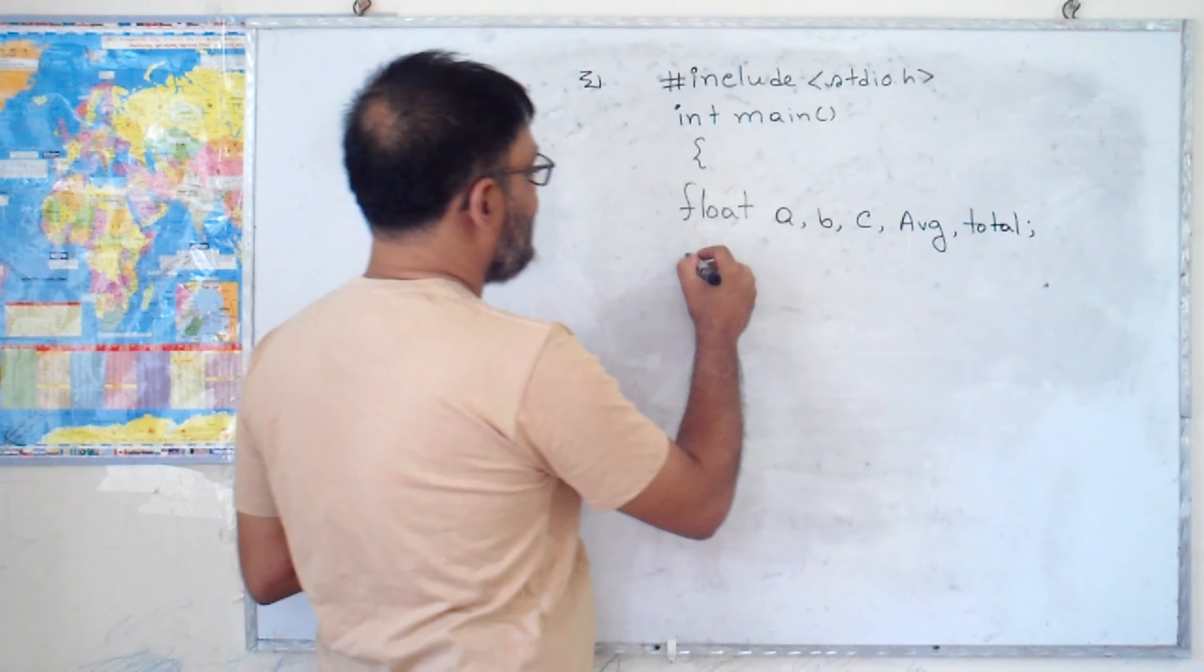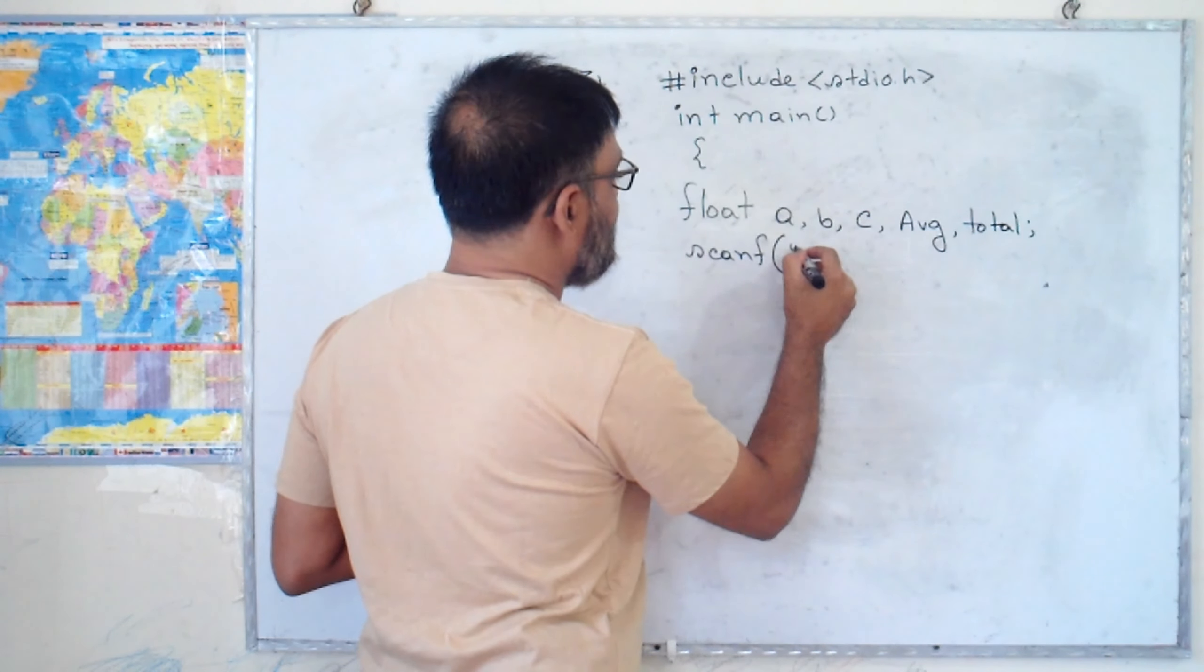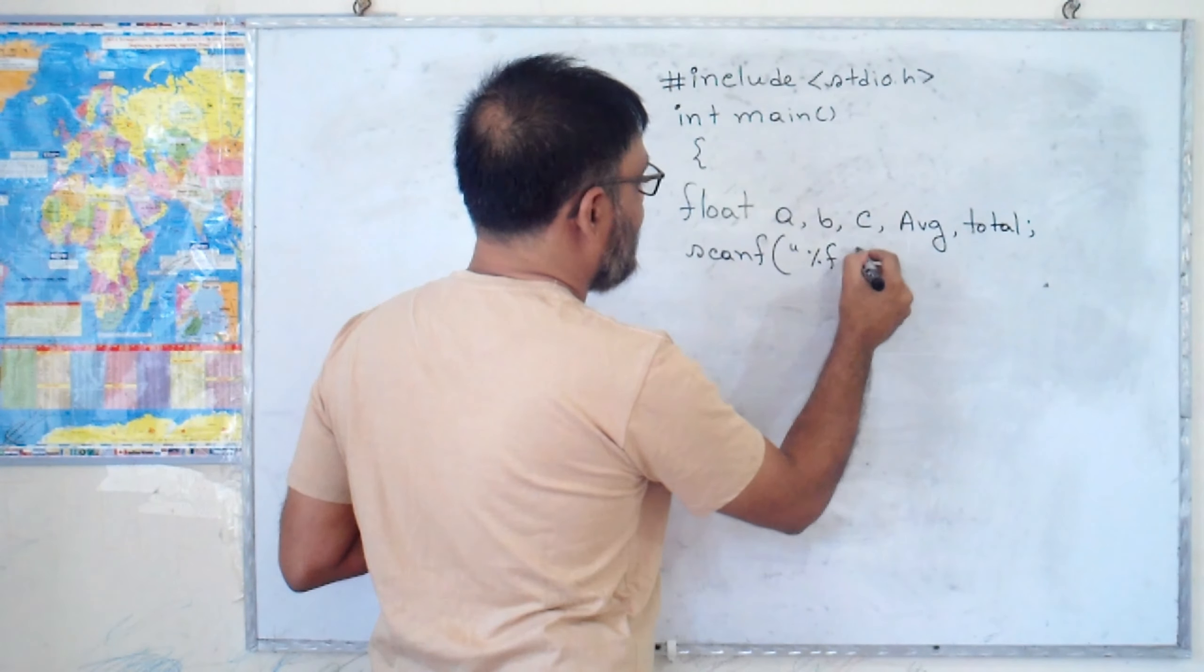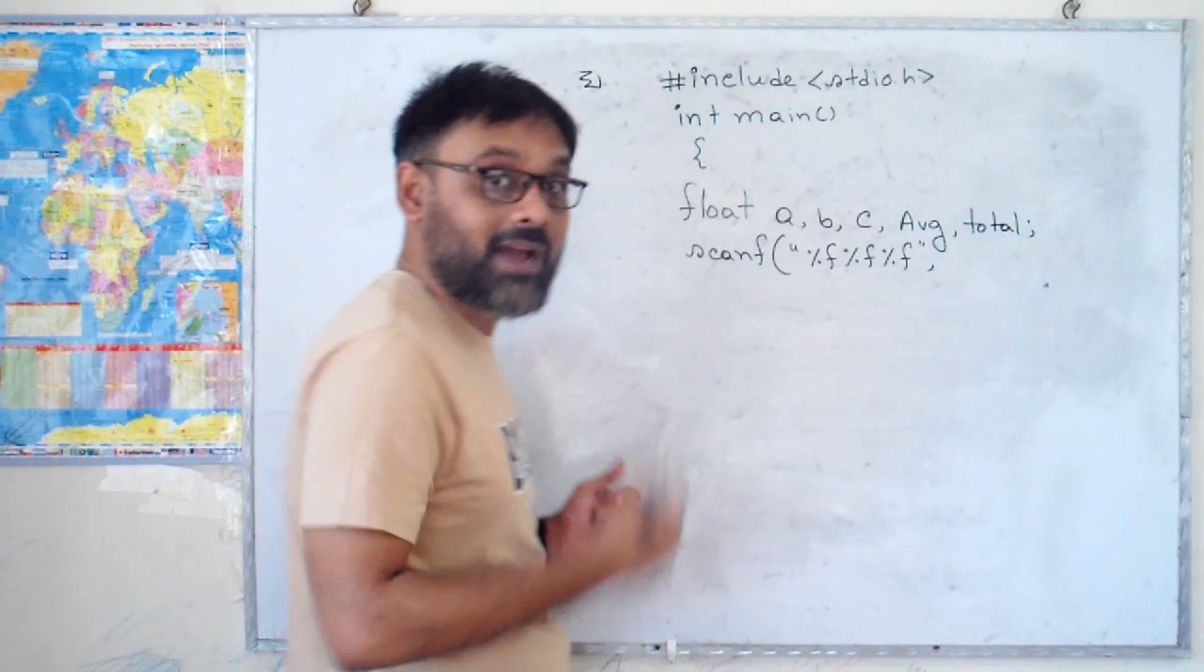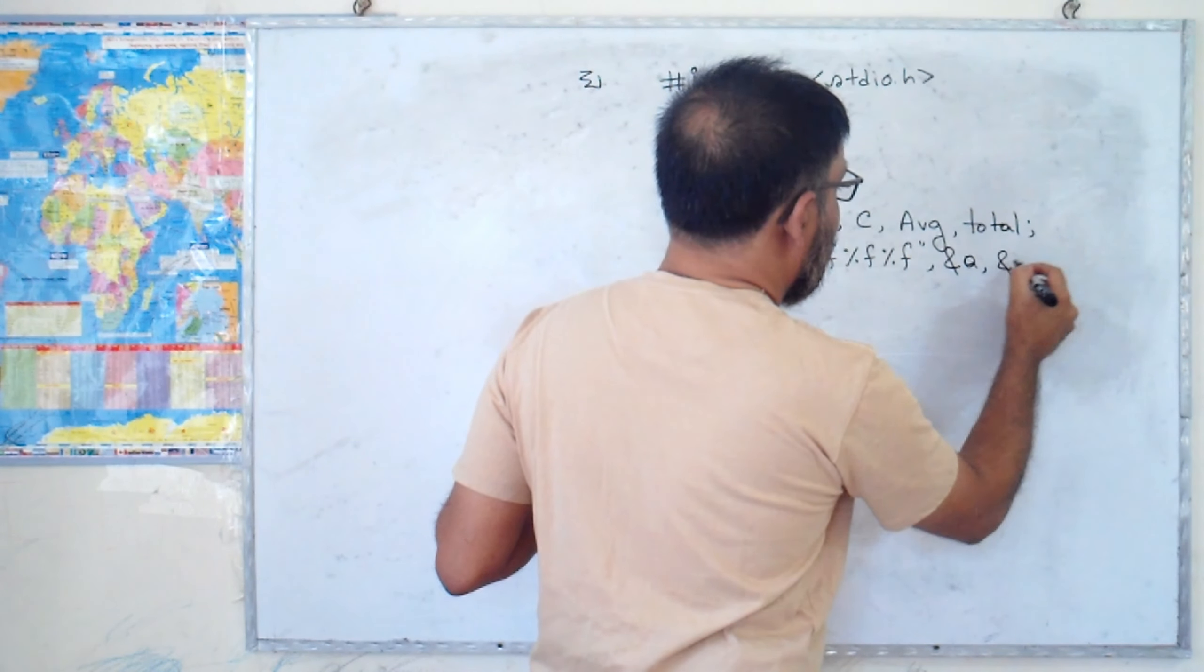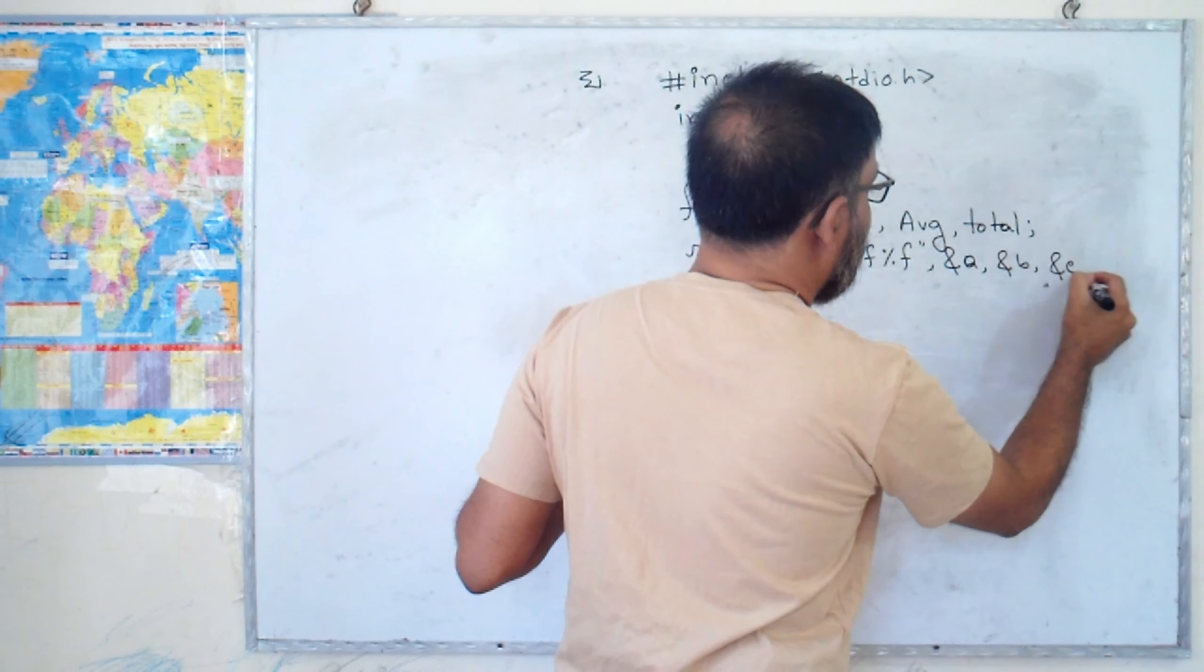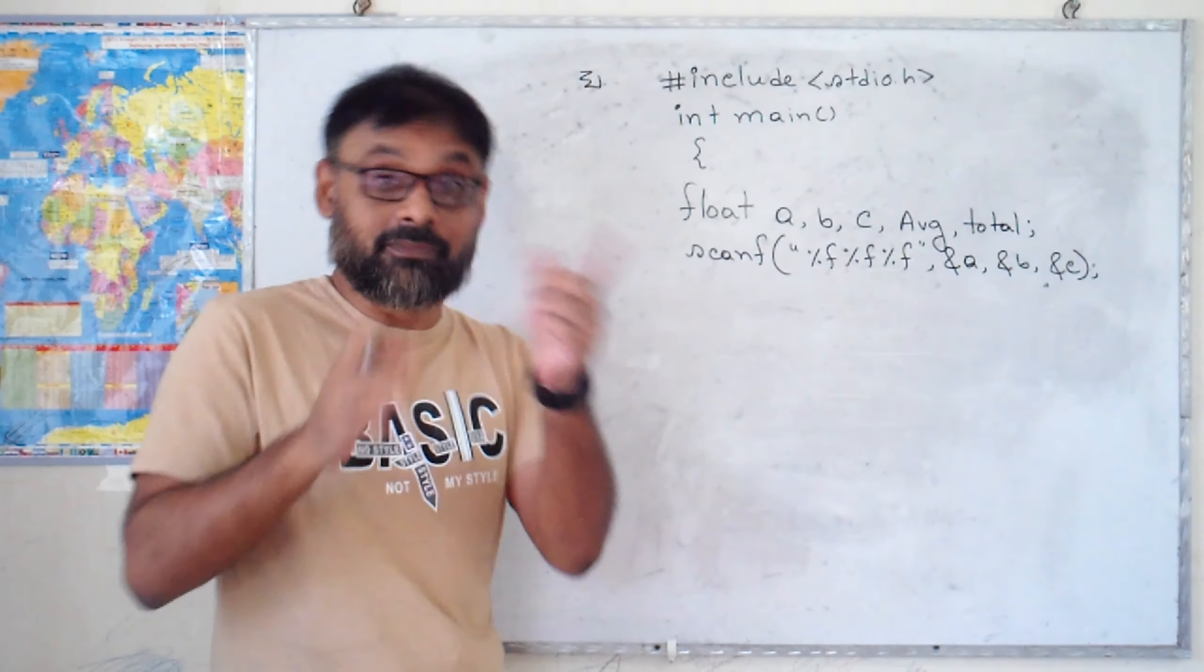Input. Scan F. What input? One, two, three. And A, and B, and C. Three. Input.